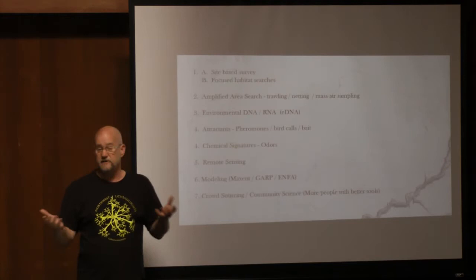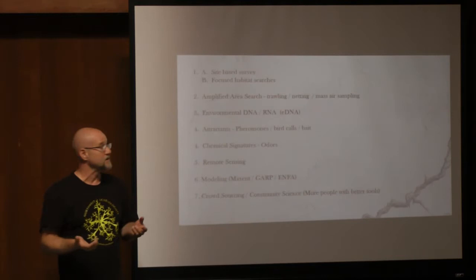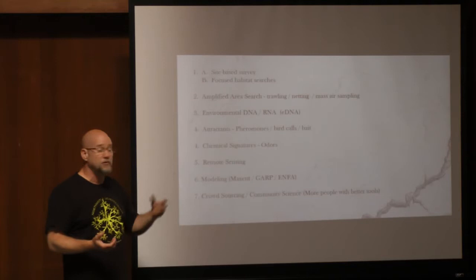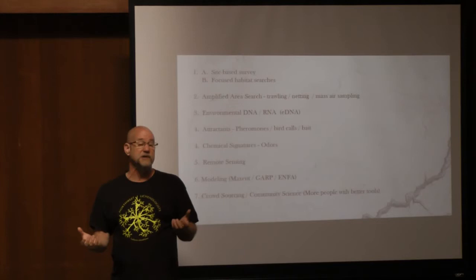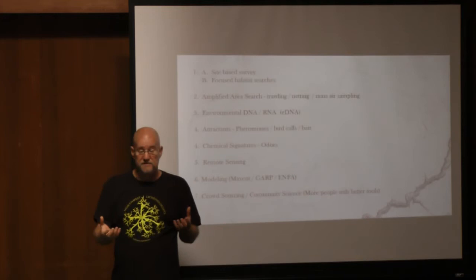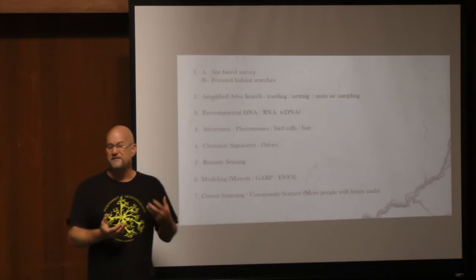Bird calls — we can put out calls to try and attract something in. It works well for animals and things that have mobility under their own control. Chemical signatures are things that are odors, chemicals given off by an organism — similar to environmental DNA. There's a plant in the eastern U.S. called sweet pine sap, Monotropsis odorata. It's a saprophyte that usually comes up under leaves and is very easily overlooked. But people know it's present nearby because they can smell it from tens of feet away, making it a very powerful locating tool for something otherwise easily overlooked.